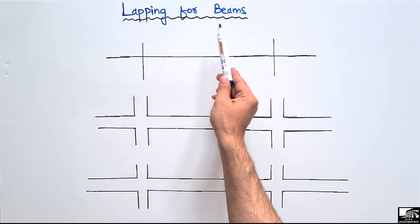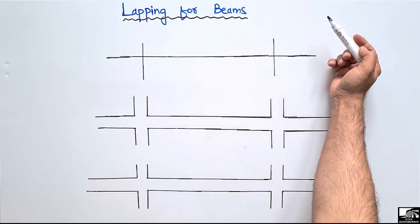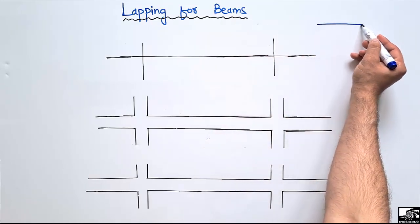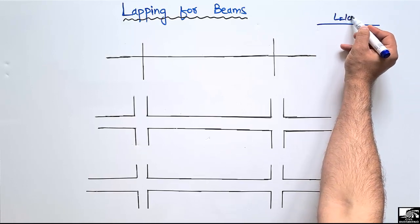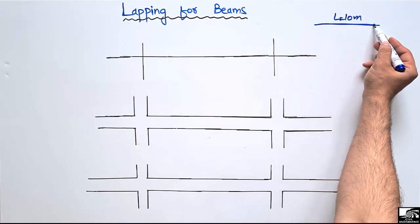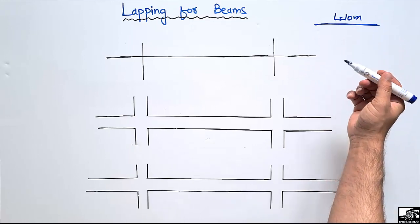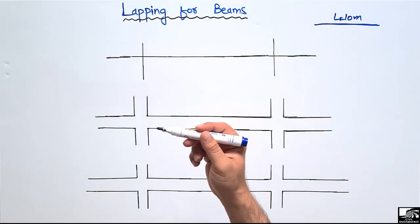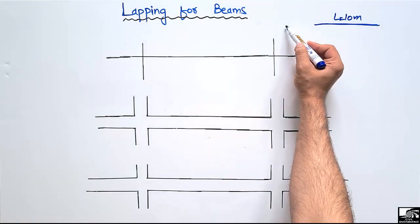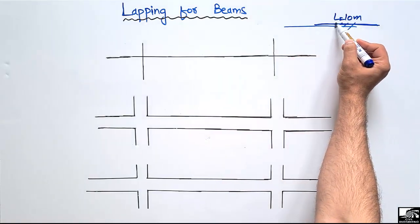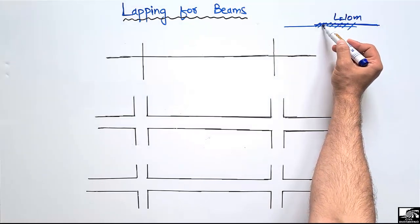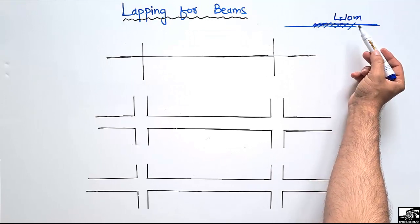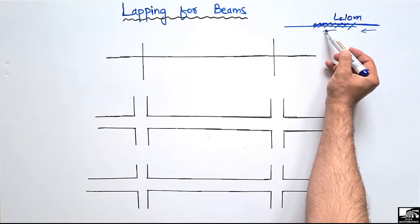We also discuss the different lapping zones for the reinforced concrete beam. Why do we provide lapping? Because the maximum length of a steel bar from the factory is 10 meters. So if you have a large number of continuous beams, we overlap two bars and connect them with a small wire, so these two bars act as one bar and the load is transferred from one bar into the other.